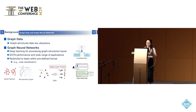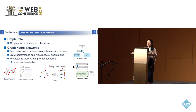Despite the great success, graph models are restricted to tasks with a predefined format — for example, node classification and link prediction. It's challenging to extend their application to unseen categories and unseen concepts, especially for new tasks defined by human instructions. Here, we name these the open-ended tasks.